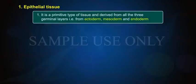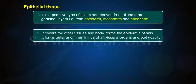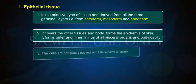Epithelial Tissue. It is a primitive type of tissue and derived from all the three germinal layers — that is, from ectoderm, mesoderm, and endoderm. It covers the other tissues and body, forms the epidermis of skin, and forms the outer and inner lining of all visceral organs and body cavity.